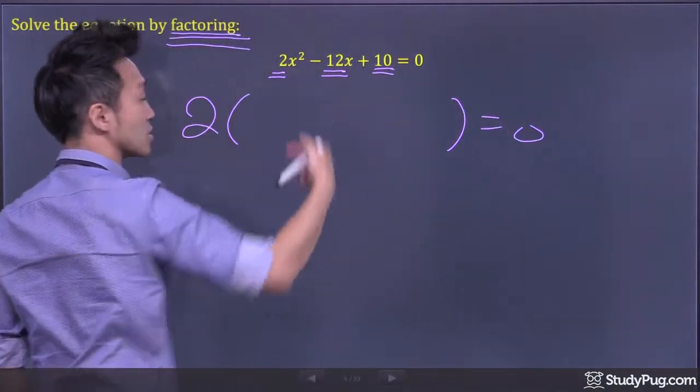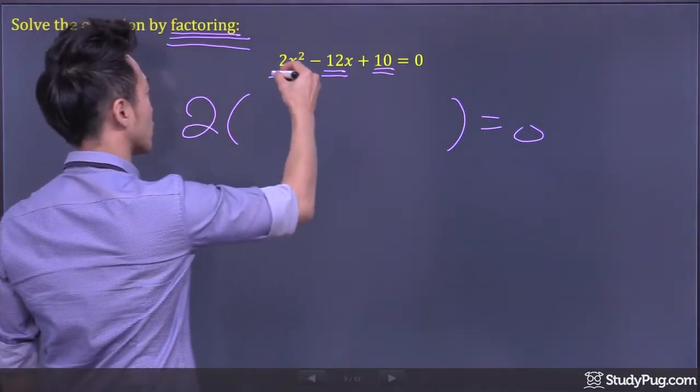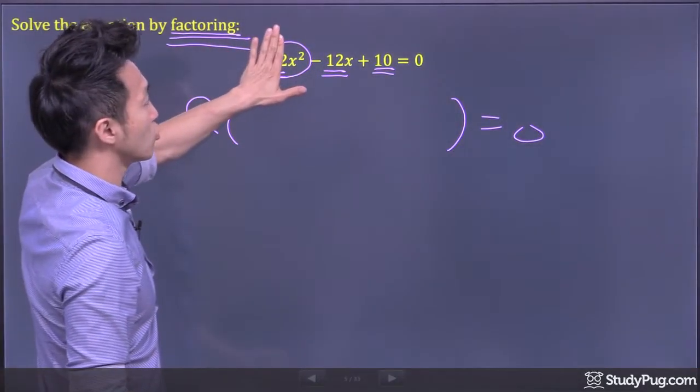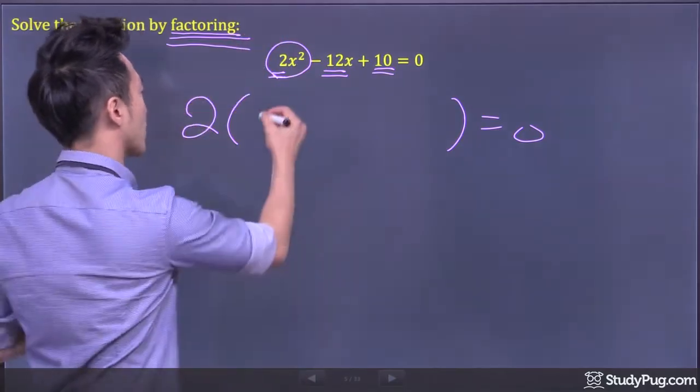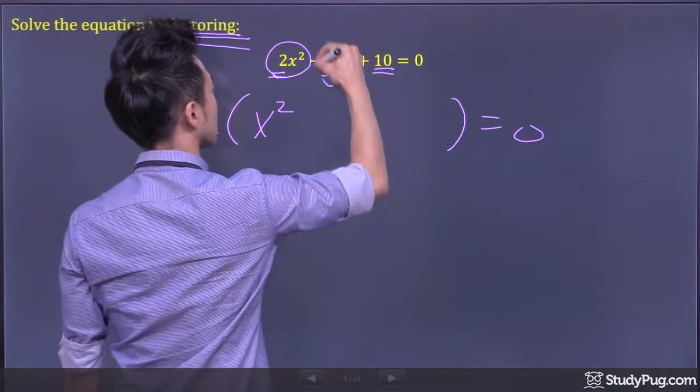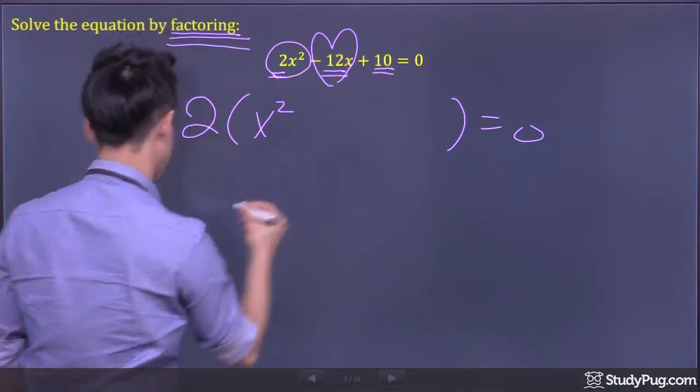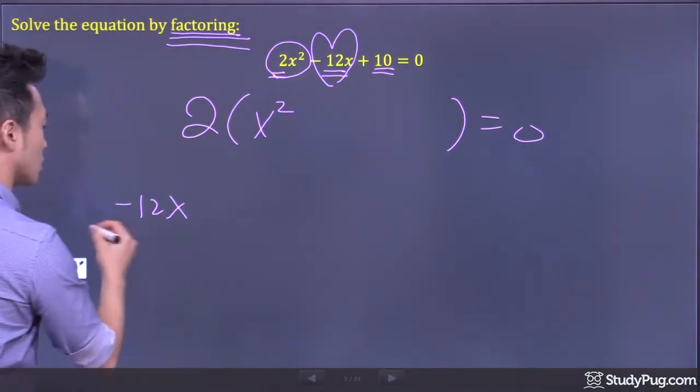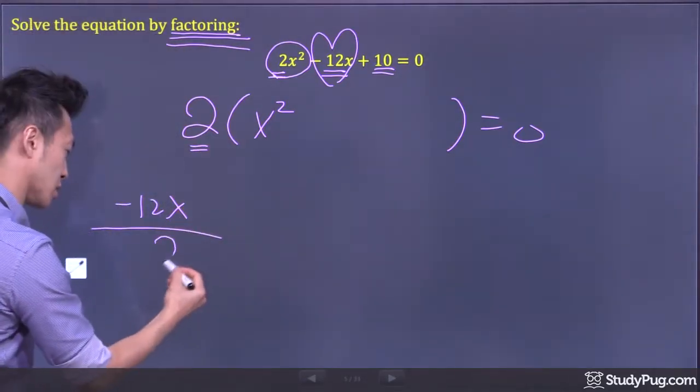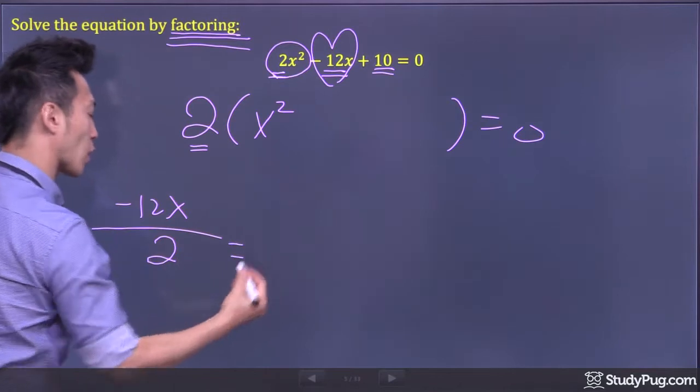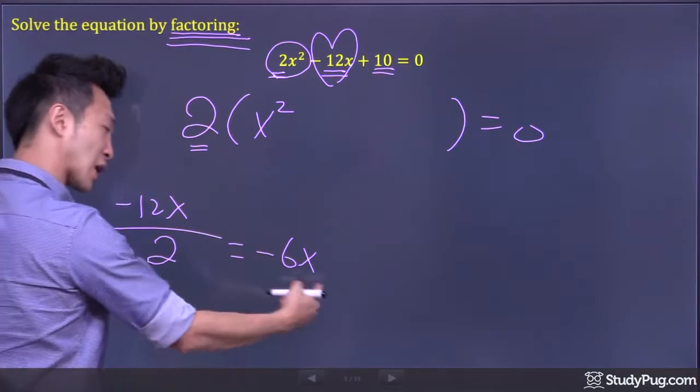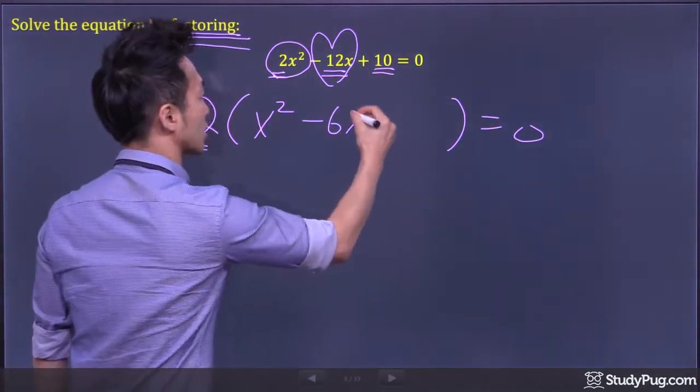And what do we have left inside the bracket? Well for the first term, 2x², factor out the 2, what do we have left? Just x². Now for the second term, -12x, we factor out 2, so divide this by 2. What do we have left? -12 divided by 2 is -6x, so we have -6x left inside the bracket.